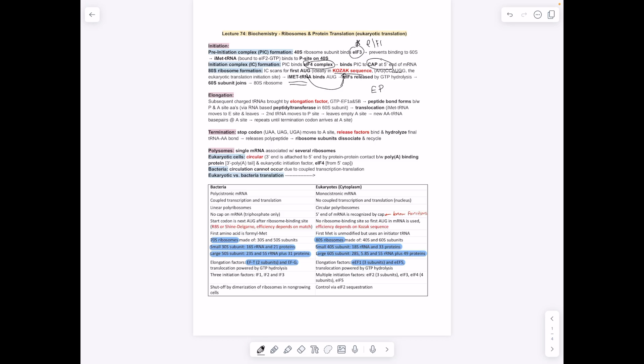We have the P site, we have the exit site E, we have the peptidyl site P, and then we have the active site A. The first codon is going to be at the P site, the first tRNA, and then the rest of them come in at the A site, and eventually each tRNA leaves through the exit site.